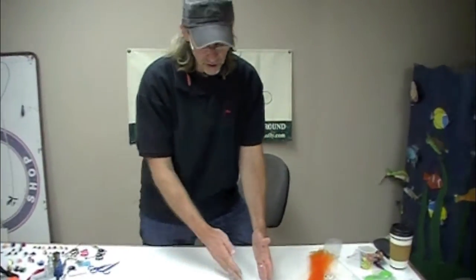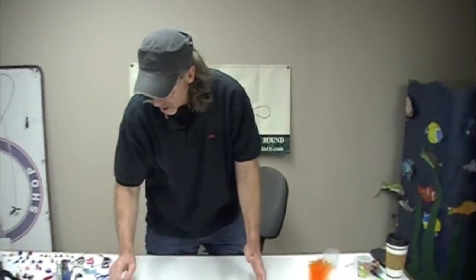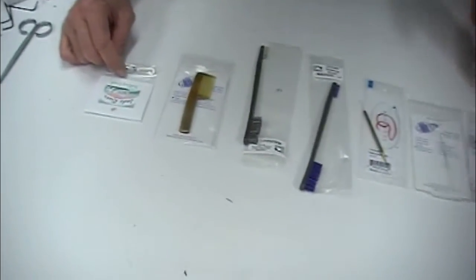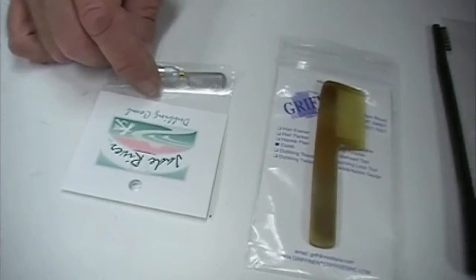You put your dubbing on with a loop and you want to buzz it up a little bit. People have very distinct preferences for the kind of product they like. Here's a little baby comb. This would be for fairly fine materials.